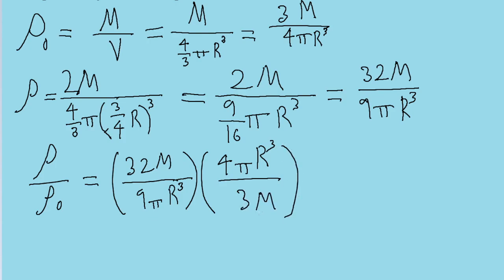And now a bunch of things are going to cancel out. The R cubes are going to cancel out, the π's cancel out, and the M's cancel out. And we're just left with 32 over 9 multiplied by 4 over 3.